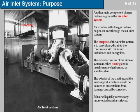Another main component of a gas turbine engine is the air inlet system. Air is delivered to the gas turbine engine air inlet through the air inlet system. The purpose of the air inlet system is to carry clean, dry air to the compressor with minimum turbulence and energy loss. The outside covering of the air inlet system is called ducting and is usually made of galvanized or stainless steel.